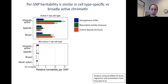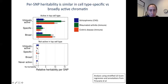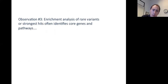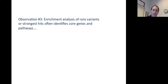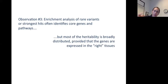As an important negative control, there's actually very little signal of heritability in active chromatin from other tissues, which is reassuring. A third observation is that when we look at enrichment analysis of rare variants or strongest hits, these often identify core genes and pathways — the PGC group has shown this for schizophrenia. But when we look at heritability broadly, it's spread very widely across the genome and the enrichment of pathways is very small. The main predictor of heritability is simply that the genes have to be expressed in the right tissues.